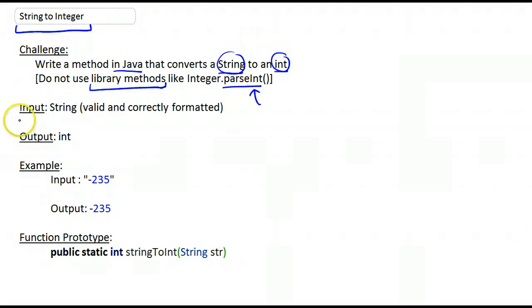So the input to your method that you're going to be writing will be a string, and that string is guaranteed to be valid and correctly formatted. So if it's a negative string, it's going to be a negative character, then followed by some digits 2, 3, 5 for example, and then that would be the end of it. This would be a string.